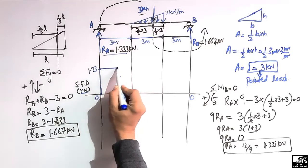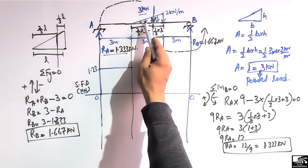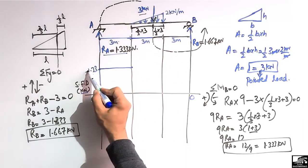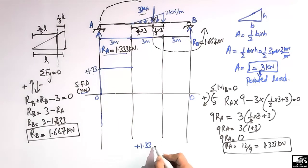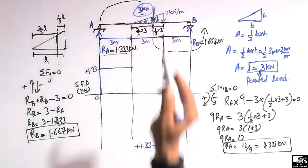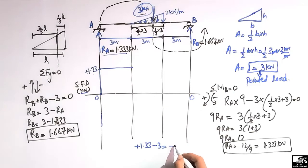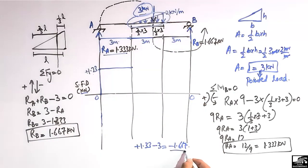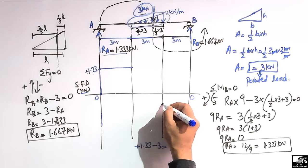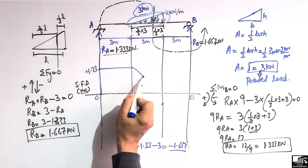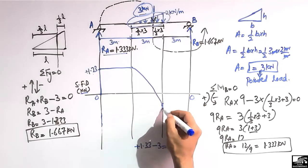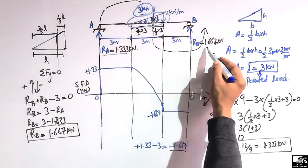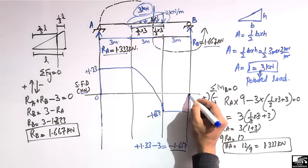There is no load acting on the beam after A, so it will be a straight line. Then there is a load acting downward of 3 kilonewtons. We subtract: plus 1.33 minus 3 gives minus 1.667. So this load of 3 kilonewtons makes the shear force drop to minus 1.667 at that point. We bring this line down to minus 1.667, and then there is no load so it continues as a straight line.